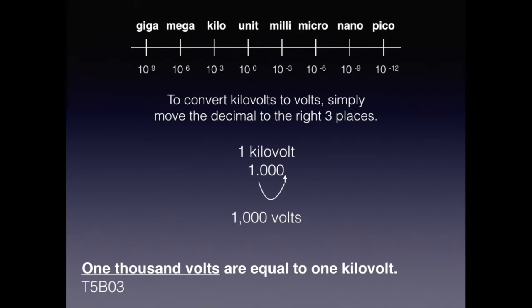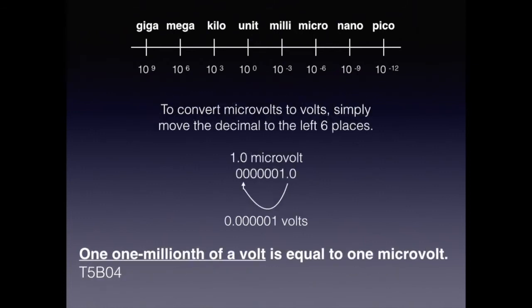To convert kilovolts to volts, simply move the decimal to the right three places. So one kilovolt, move the decimal place over three places, equals 1000 volts. For the exam, know that 1000 volts are equal to one kilovolt. To convert from microvolts to volts, simply move the decimal place to the left six places. So one microvolt, moved over six places, turns out to be one millionth of a volt. For the exam, know that one millionth of a volt is equal to one microvolt.